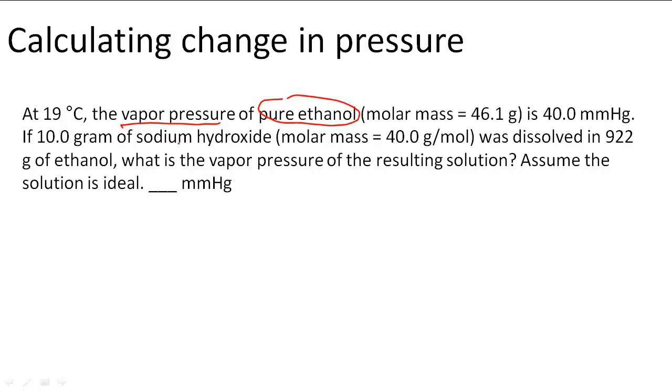So if 10 grams of sodium hydroxide, molar mass 40.0 grams per mole, was dissolved in 922 grams of ethanol, what is the vapor pressure of the resulting solution? Assume the solution is ideal.